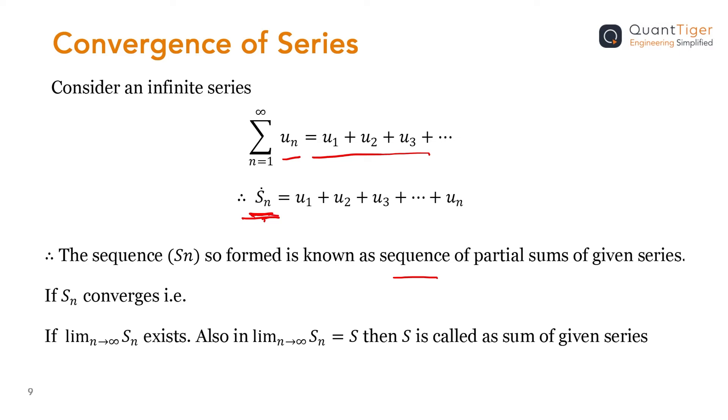If this S_n, if this sequence of partial sums of the given infinite series does not converge—meaning after addition it is not coming close to any number, it is going towards plus infinity or minus infinity—then we can say that this S_n is not convergent. S_n is divergent. If the sequence of partial sum is divergent, then we can say that the given infinite series is also divergent.